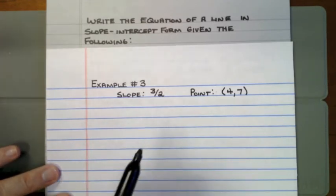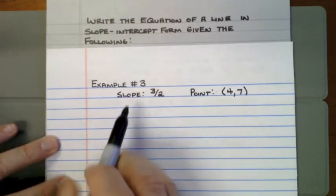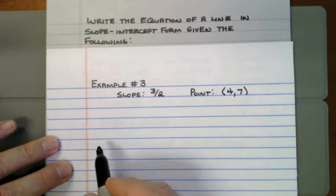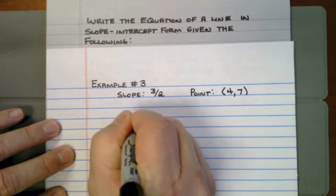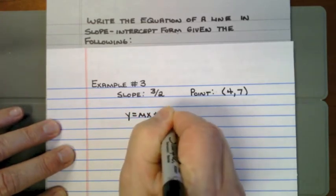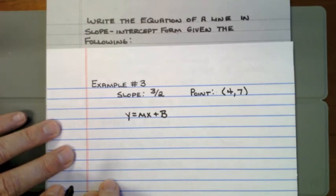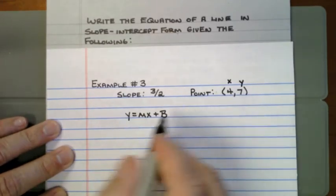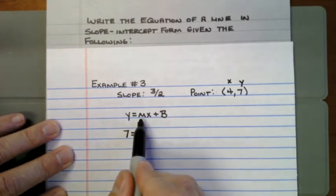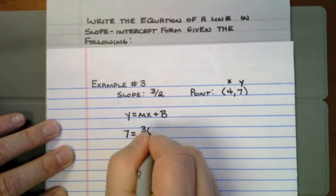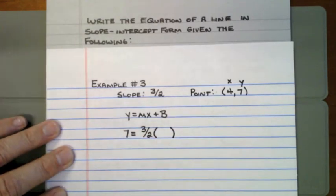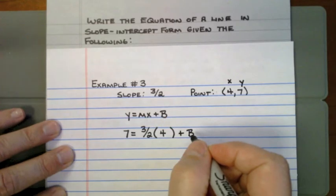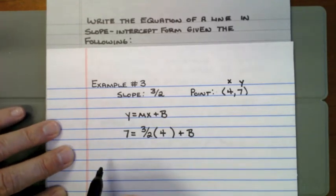Example number 3: write the equation of a line in slope-intercept form. They gave me the slope but not the y-intercept. I need to use the given point to figure out the y-intercept by using y equals mx plus b and solving for b. A point consists of an x and a y. My y is 7, m is the slope which is 3 halves, multiplied by my x value of 4, plus b. b is the y-intercept — once I solve this, I'll figure out what it is.